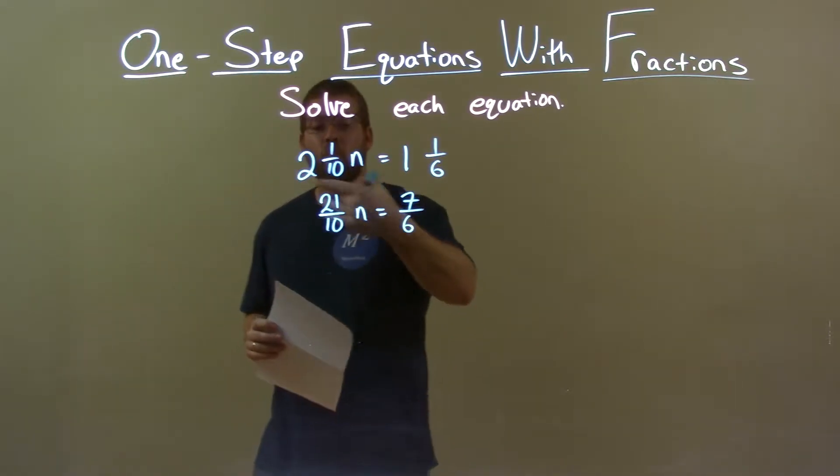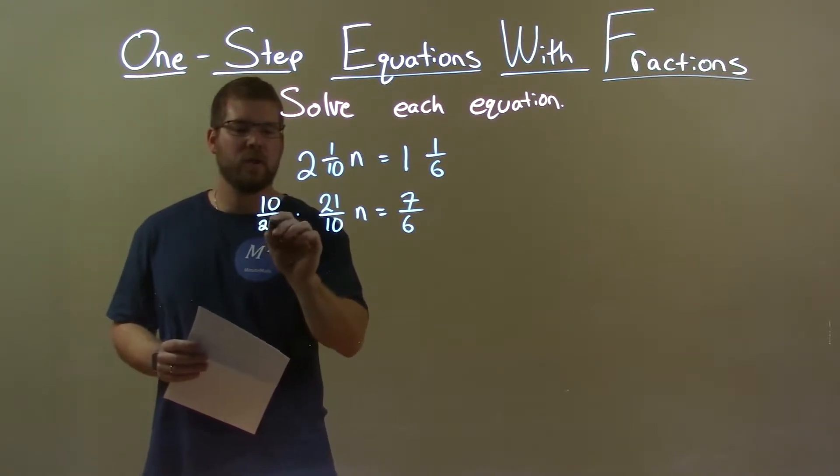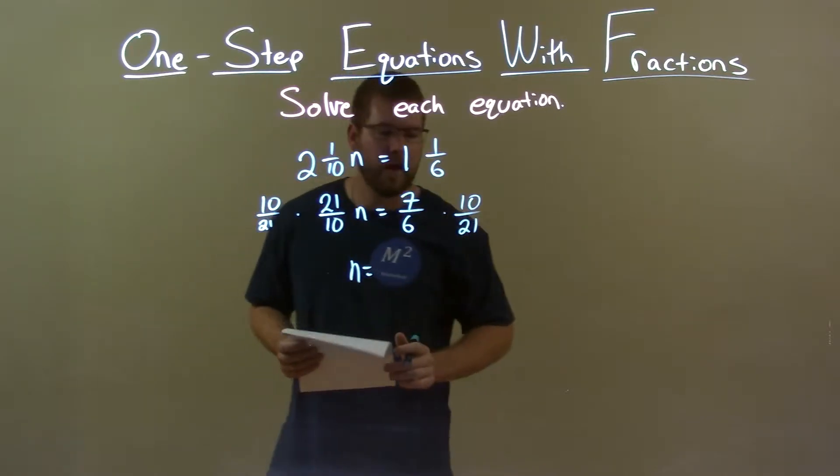We then want to multiply both sides by the reciprocal, 10 over 21. This leaves us n by itself.